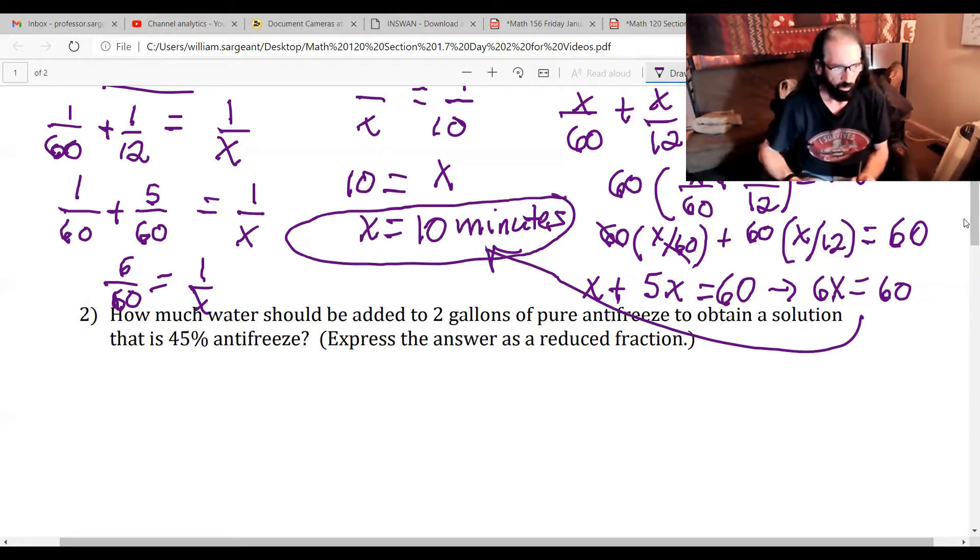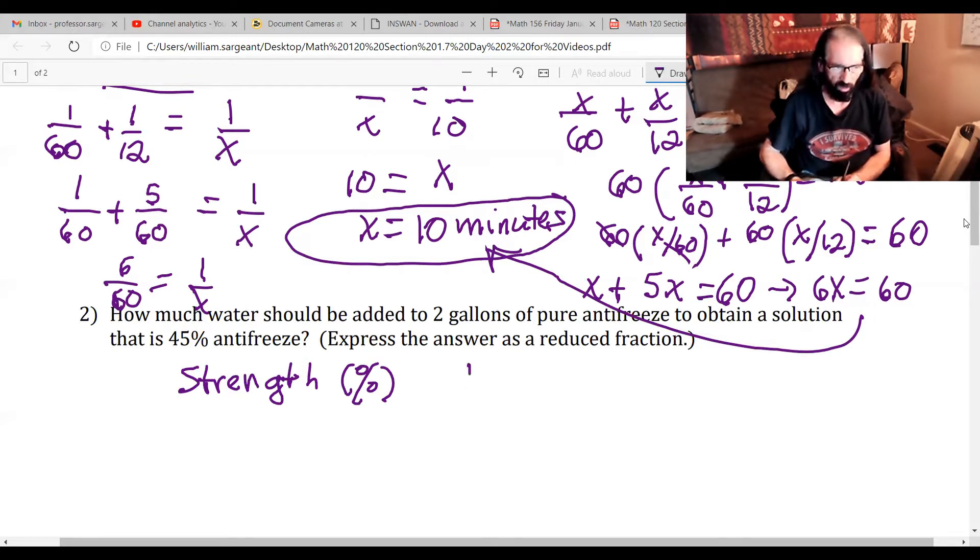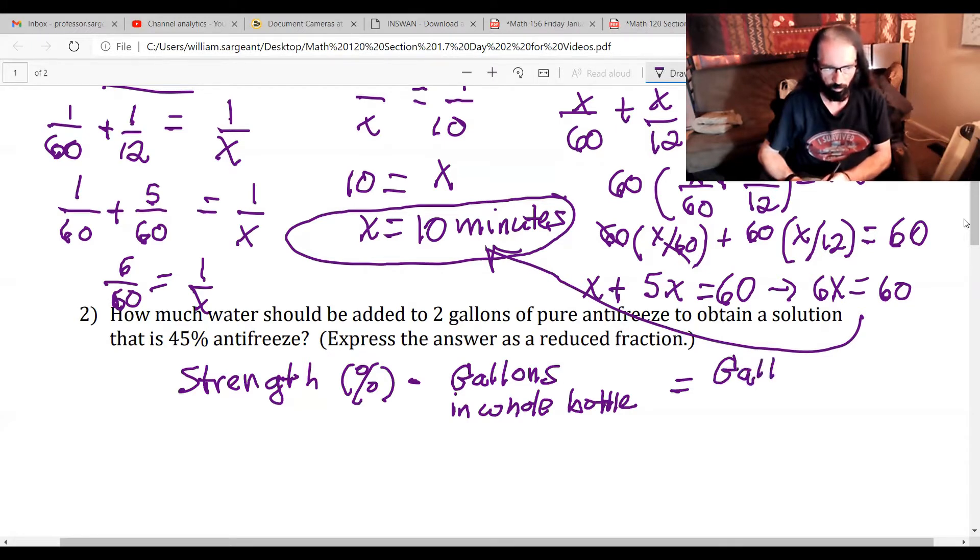So what we have to use here is the strength, first represented as a percent, will change to a decimal, times gallons in the whole bottle or whatever type of container it's being kept in. You multiply those and that's going to give you how many gallons of the thing you're concentrating on, in this case antifreeze.